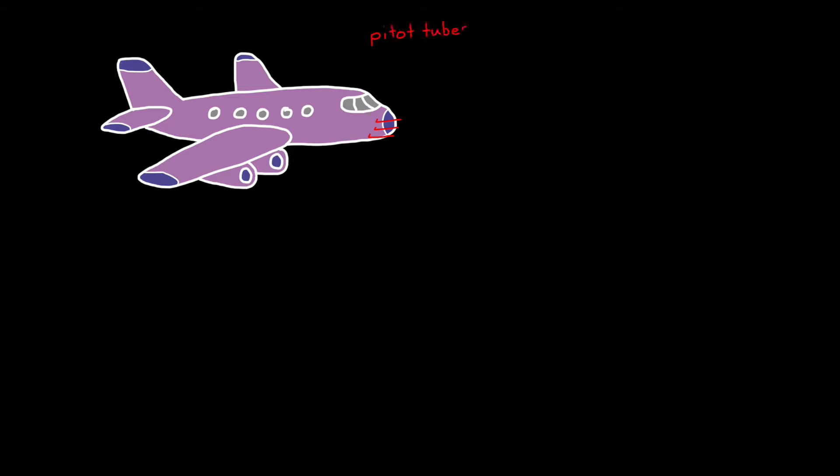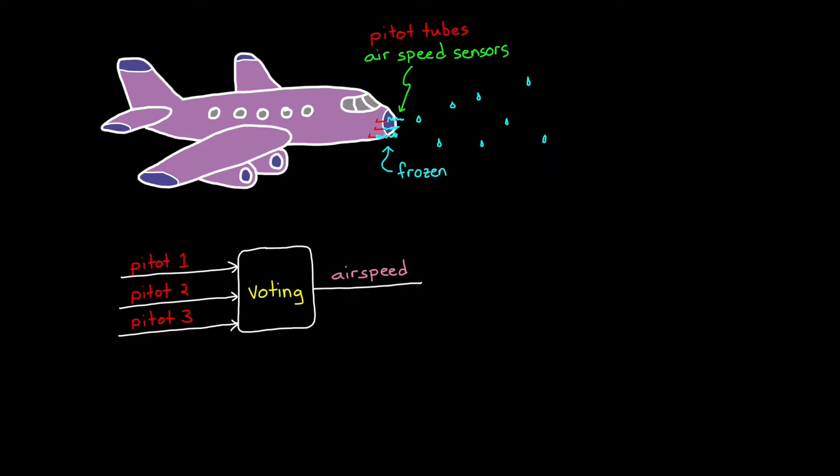An example here could be using three pitot tubes to have a reliable measure of an aircraft's airspeed. If one breaks or reads incorrectly, then the airspeed is still known using the other two. So duplicating sensors is an effective way to increase reliability. However, we have to be careful of single failure modes that can affect all of the sensors at the same time. An aircraft that flies through freezing rain might find that all three pitot tubes freeze up, and no amount of voting or sensor fusion will save the measurement.